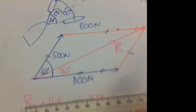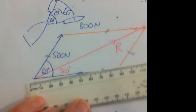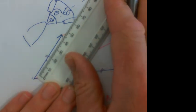In your exam, you can draw a scale diagram or they may have already drawn you a scale diagram and you've just got to measure it. So 800 newtons is 8 centimetres, 500 newtons is 5 centimetres.